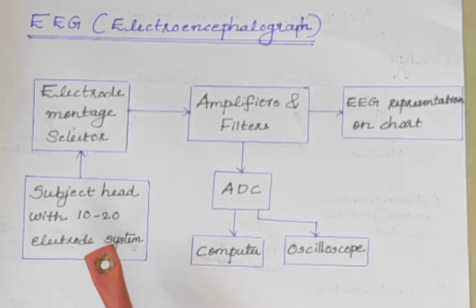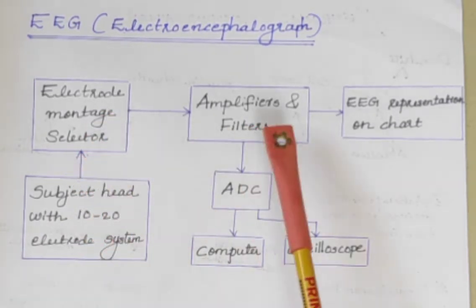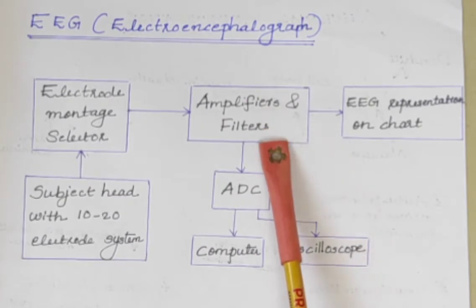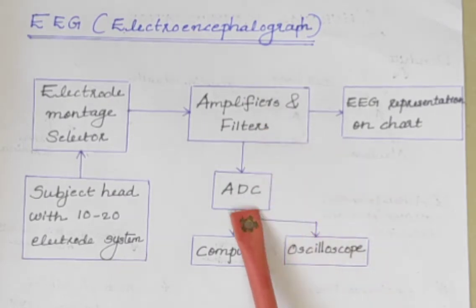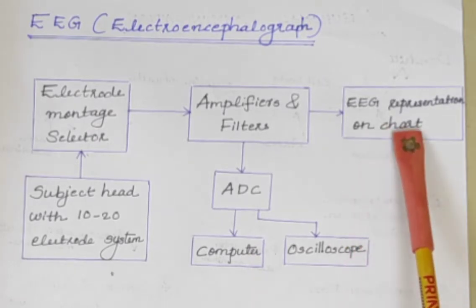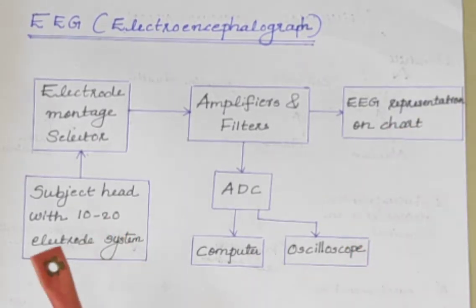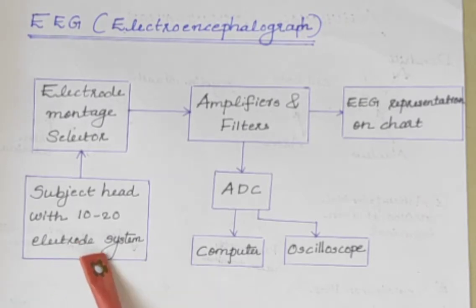The main parts are electrodes, electrode montage selector, amplifiers and filters, analog to digital converter, computer, oscilloscope, and EEG representation device. So first one is the electrode.